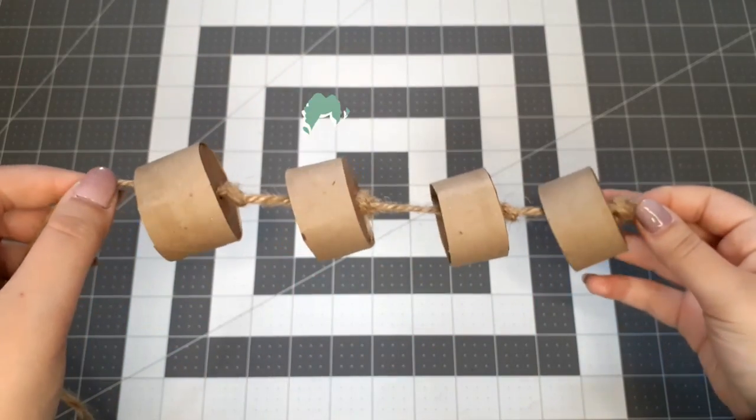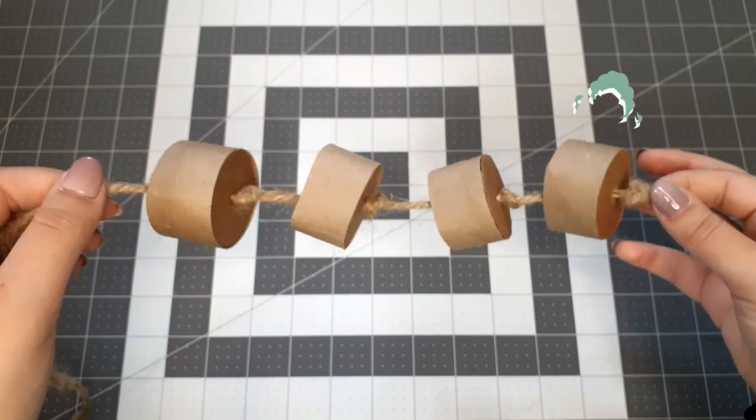And that's it, the boredom breaker is done. You can hang this up in your hamster's cage and put some food in each cup for your hamster to find.